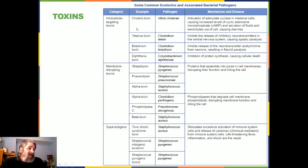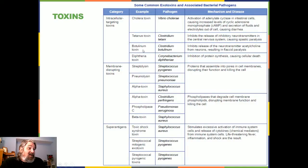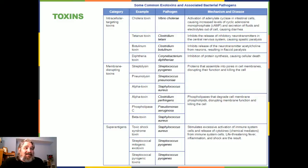Some examples of exotoxins: cholera toxin, caused by Vibrio cholerae, is an intracellular targeting toxin. It works by activating adenylate cyclase in intestinal cells, causing increased levels of cyclic AMP and secretion of fluids and electrolytes out of cells, causing diarrhea. Tetanus toxin was recently in the news — there was a case where a child with tetanus survived but the parents still refused to vaccinate, resulting in about $800,000 in bills. Botulinum toxin inhibits the release of acetylcholine from neurons, causing flaccid paralysis.